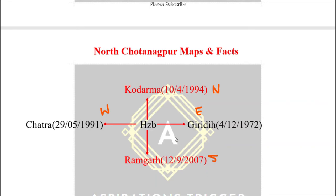To summarize the trick: finally in the south, Ramgarh is placed. Giridih is the first district that was separated from Hazaribagh. It was separated on 4th December 1972 — Giridih was separated from Hazaribagh on 4th December 1972.